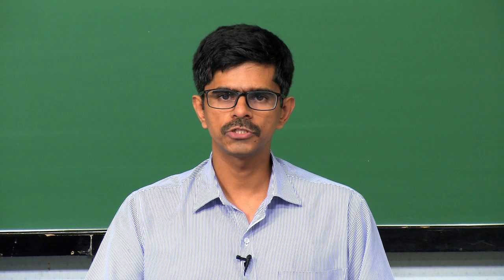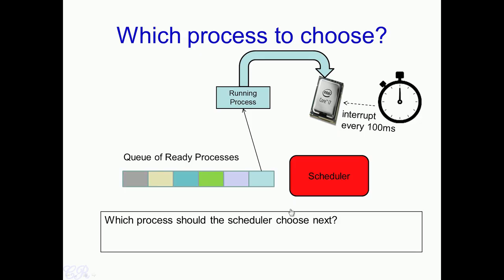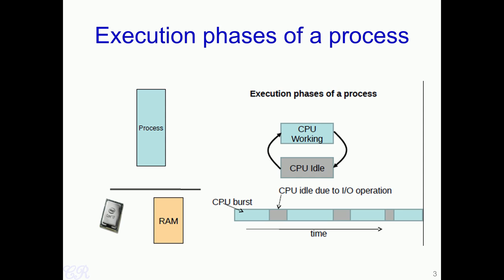Hello. In this lecture we will look at CPU scheduling algorithms. We had seen in operating systems that a scheduler present would choose a particular process from the ready queue, and that process is assigned to run in the processor. The question we are going to analyze now is how should the scheduler choose the next process to run on the CPU from the existing queue of ready processes. To analyze this, we first look at execution phases of a process.